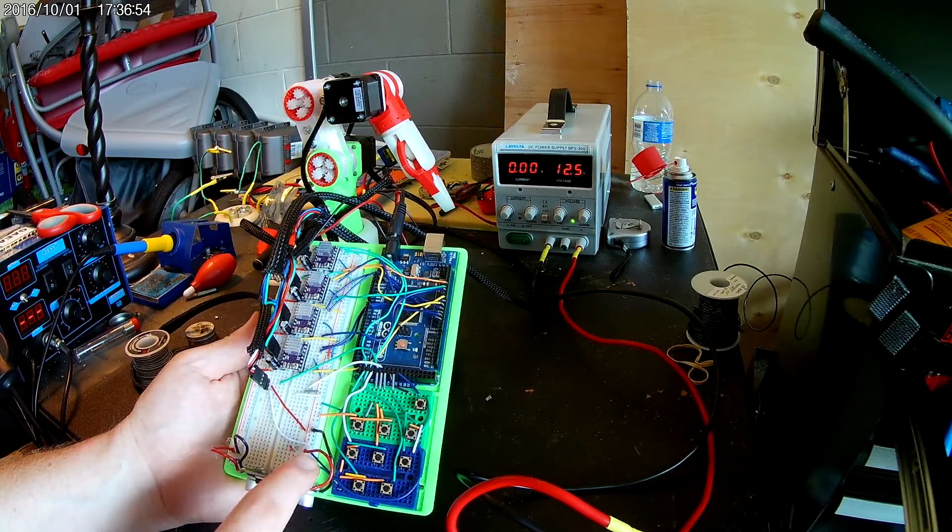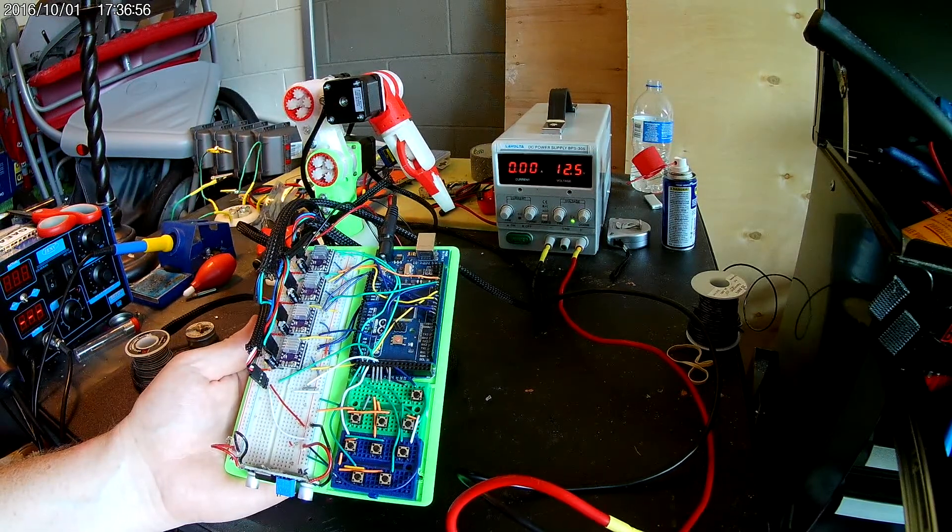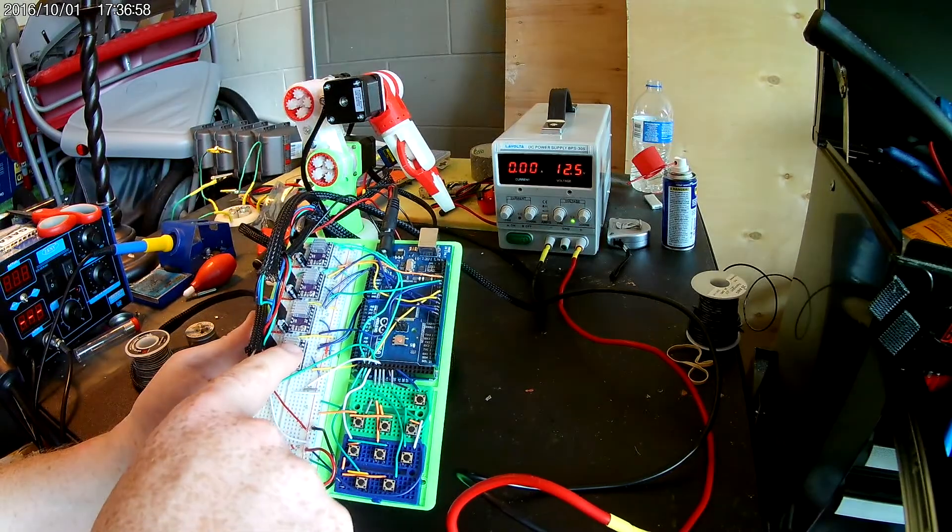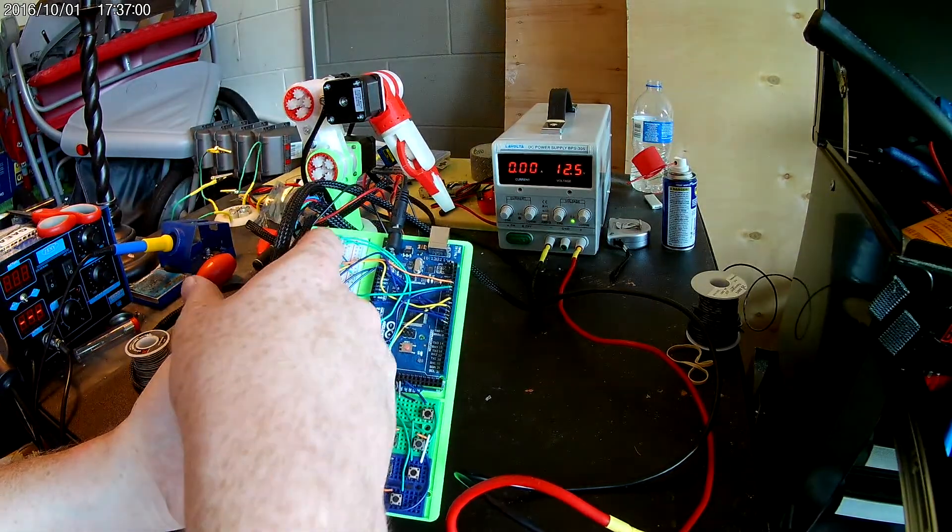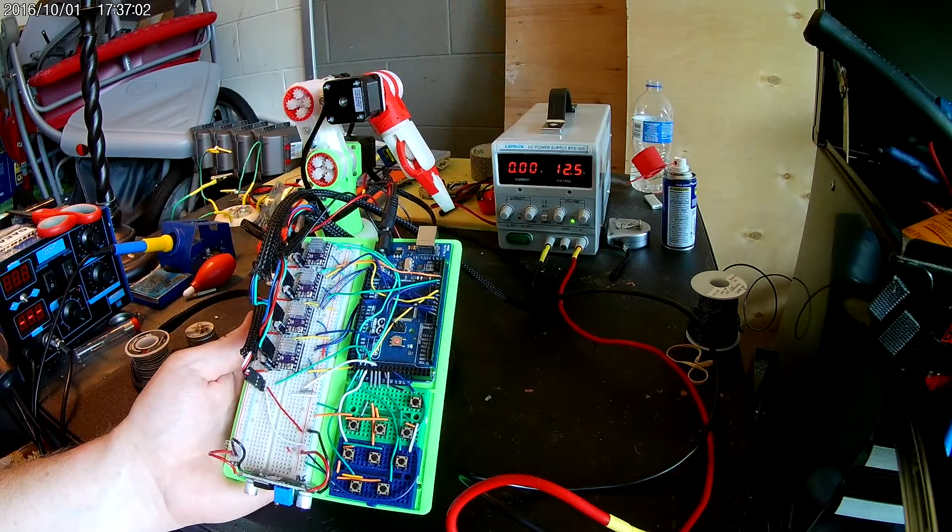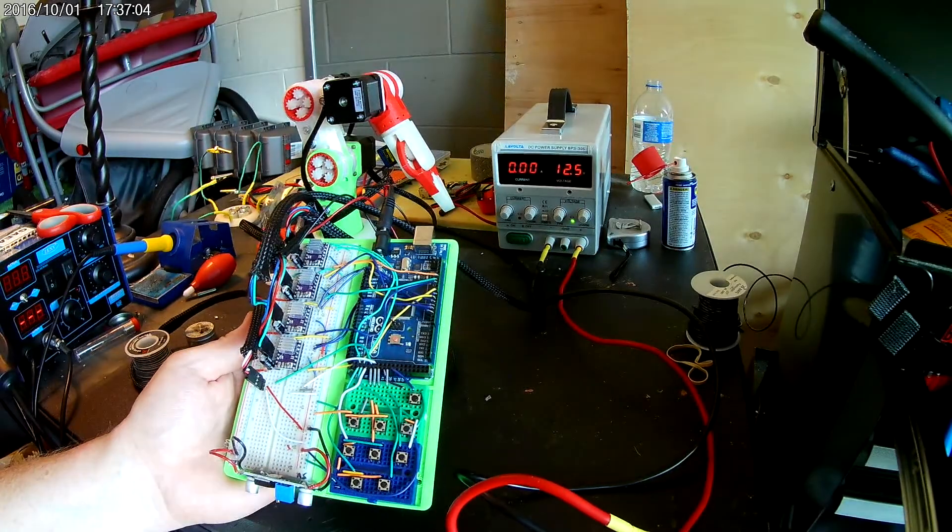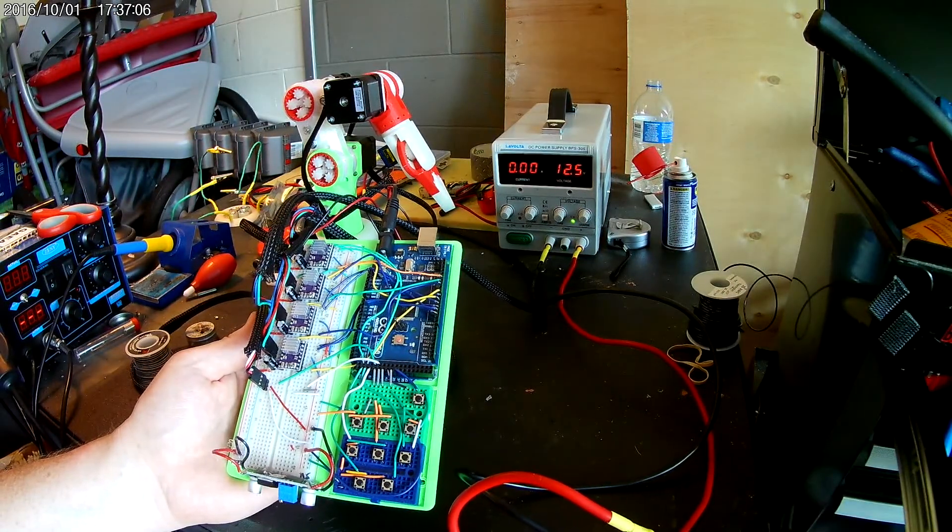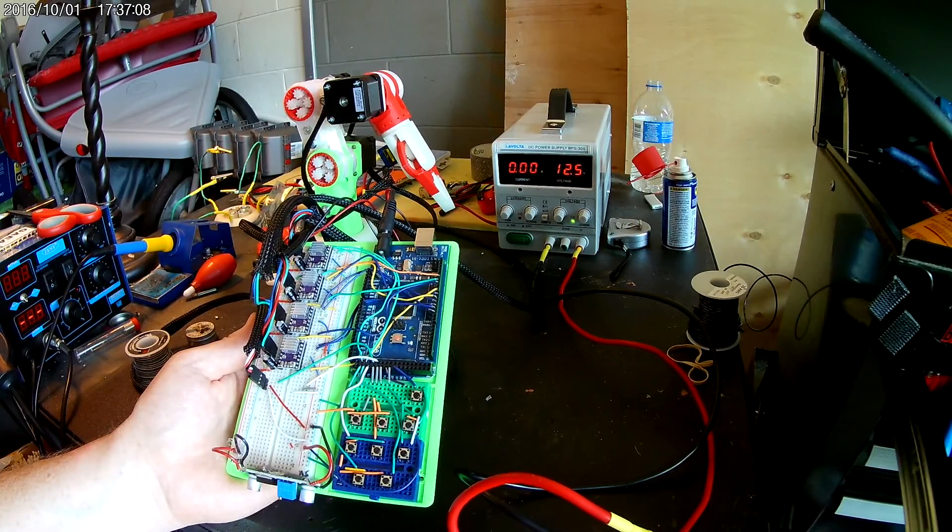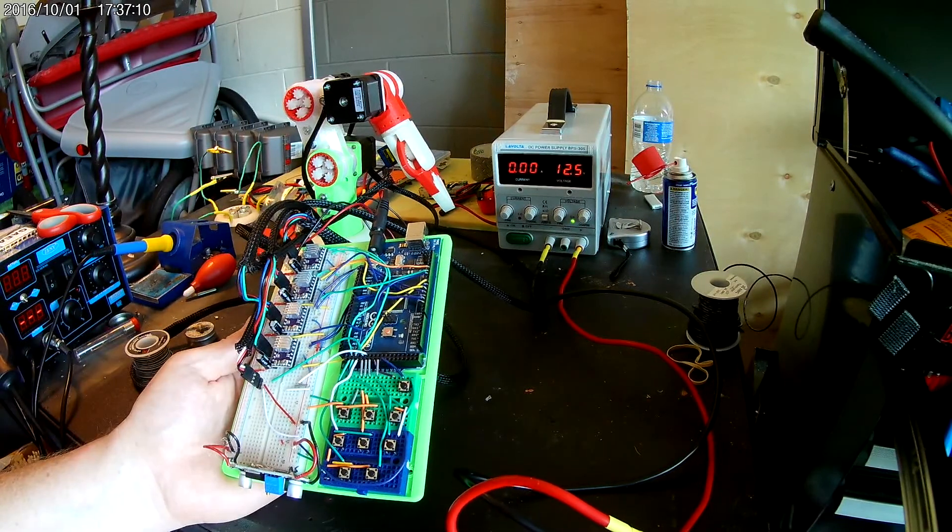I step it down to 5 volts for the servo. And each of these drivers are controlling each stepper motor. They make shields that go right on top of your Arduino Mega and it'll control the stepper motors and all that kind of stuff. But I already have this readily available.